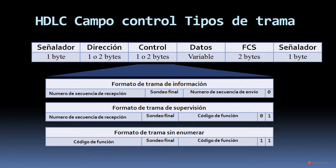En este gráfico, además de las dimensiones de cada campo, podemos distinguir las diferencias en el campo de control según el tipo de trama HDLC. El señalador tiene un byte, el campo de dirección puede ser de uno o dos bytes, el campo control también de uno o dos bytes, el de datos es variable y el FCS es de dos bytes. Finalizamos con ese señalador nuevamente de un byte.